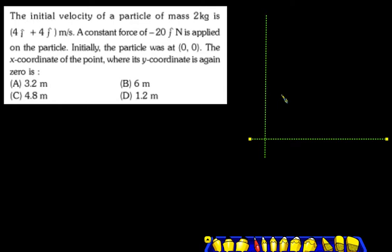Initial velocity of particle 2 kg is 4i plus 4j. The initial velocity in the x-coordinate is 4 meters per second and in the y-coordinate is 4 meters per second.